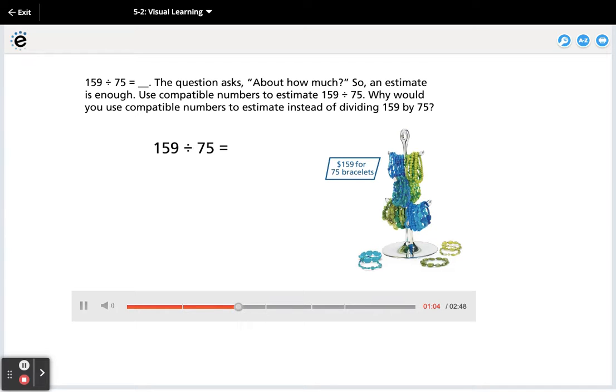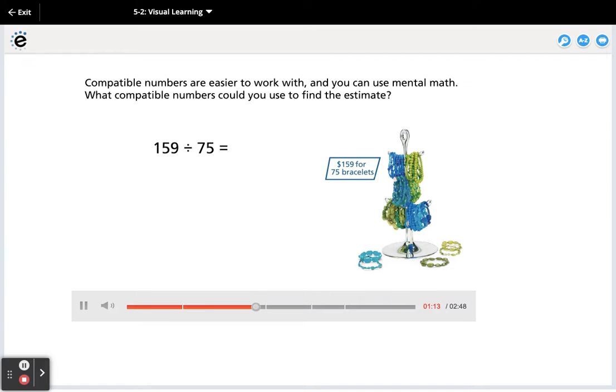Why would you use compatible numbers to estimate instead of dividing 159 by 75? Compatible numbers are easier to work with and you can use mental math. What compatible numbers could you use to find the estimate?